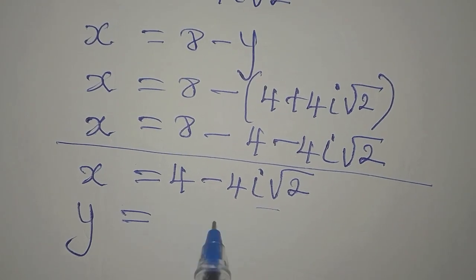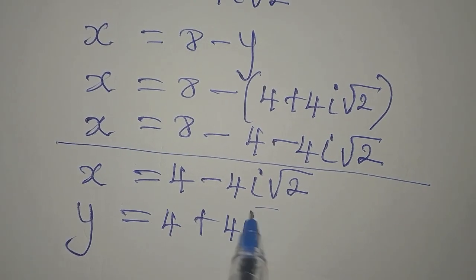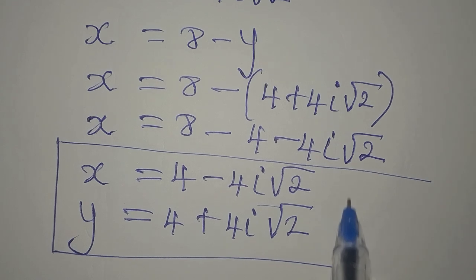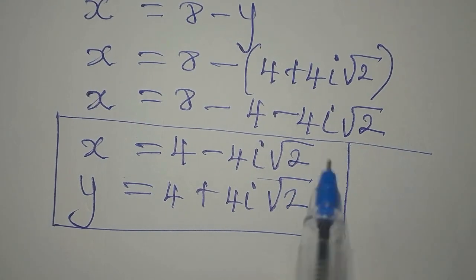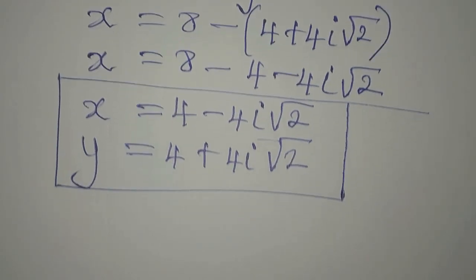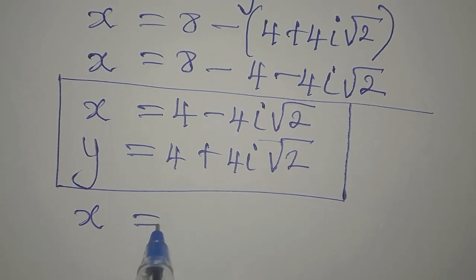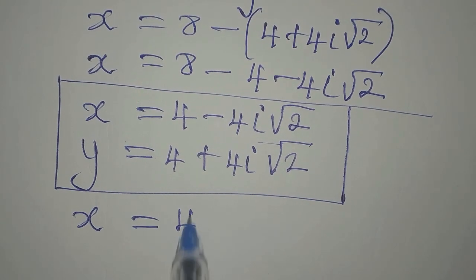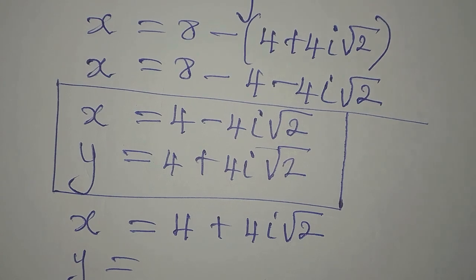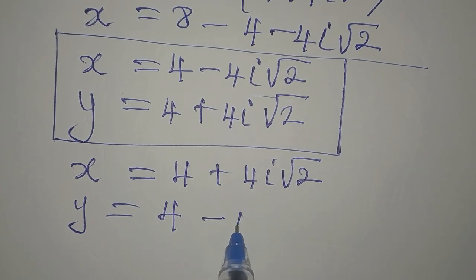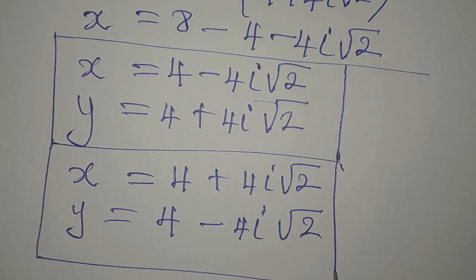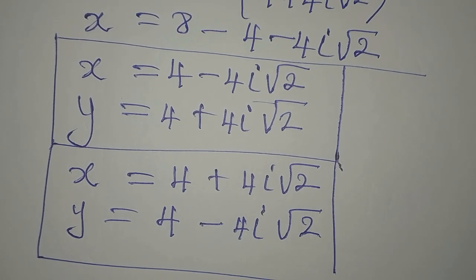So when x is 4 minus 4i root 2, the value of y is 4 plus 4i root 2. Always note that if you have something similar where the only difference is a positive or negative sign, you can also say that when x equals 4 plus 4i root 2, then y for that case will be 4 minus 4i root 2. These are the values of x and y that satisfy the equation.